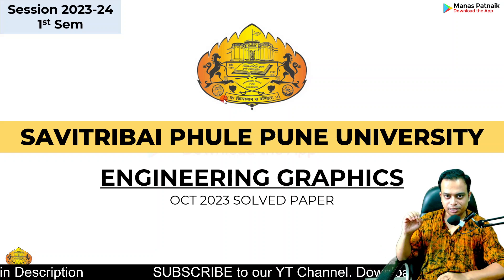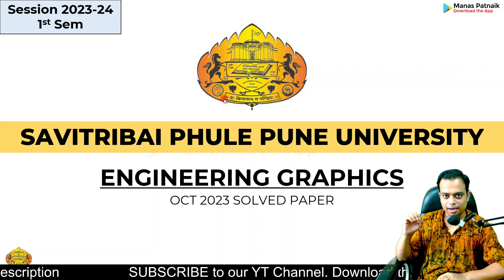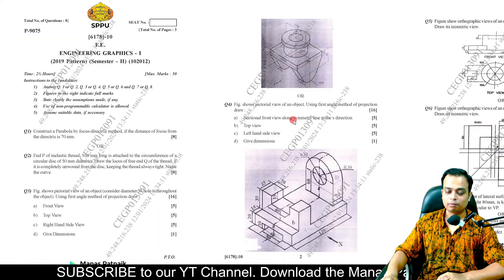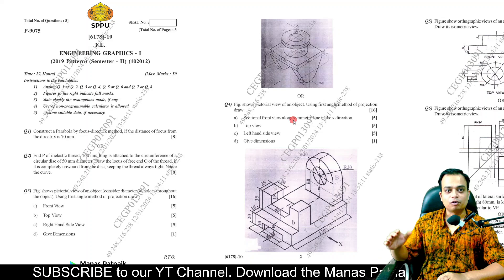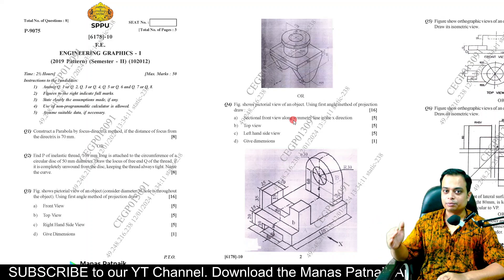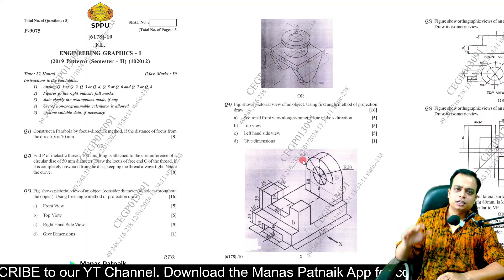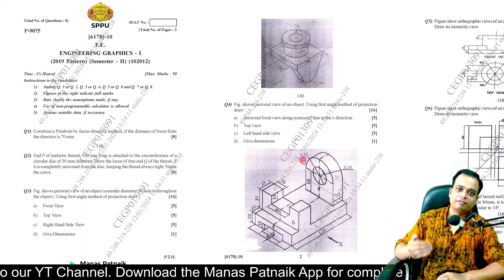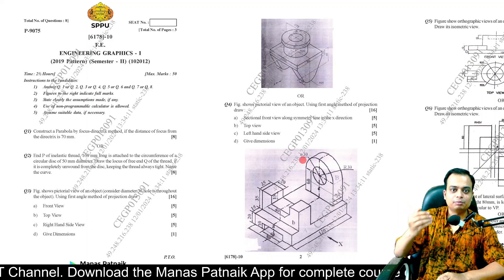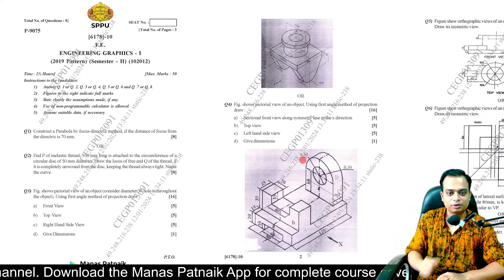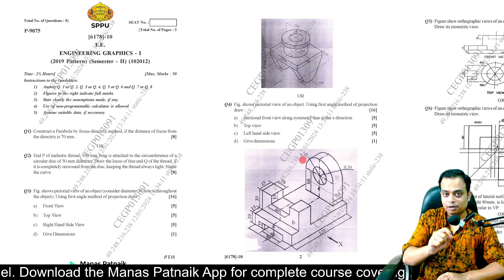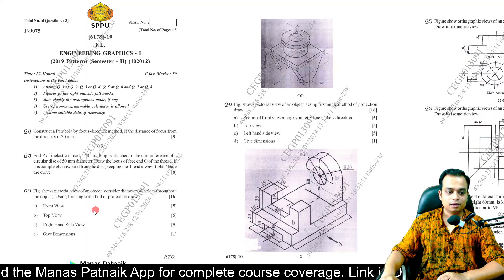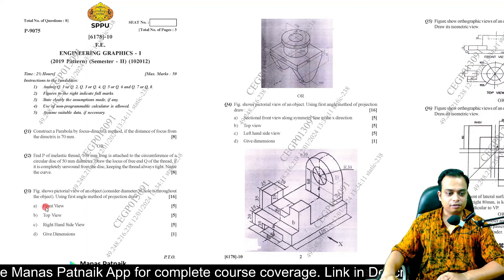Moving on to question number three. There is a choice between questions three and four. Both problems are from the chapter on orthographic projections. Question four is a special case — sectional orthographic — wherein we cut the object and then make the projections. Right now let's focus on question three.